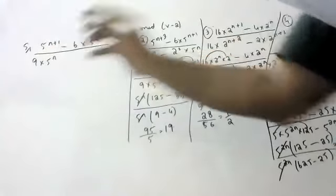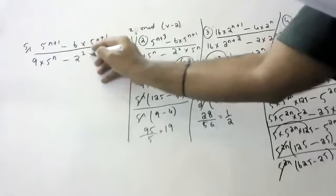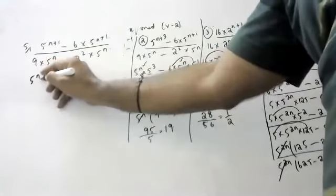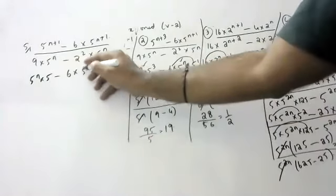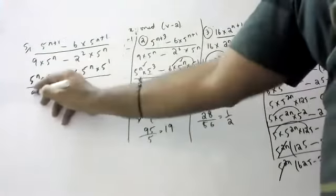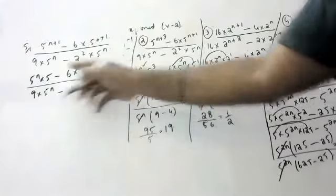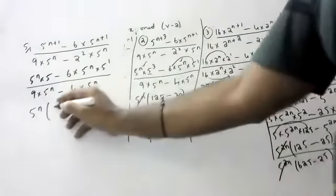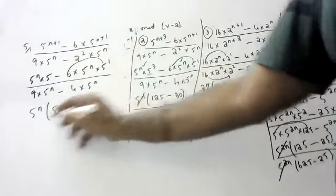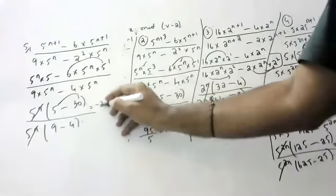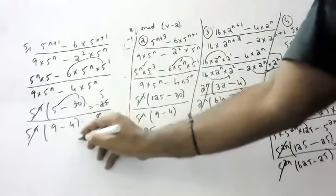Another question: 5 to the power n plus 1, minus 6 into 5 to the power n plus 1, divided by 9 into 5 to the power n, minus 2 squared into 5 to the power n. A student explains: 5 power n into 5 power 1, minus 6 into 5 power n into 5 power 1. What is common here? 5 power n. So numerator: 5 minus 30. Denominator: 5 power n into 9 minus 4. 5 power n cancels, giving minus 25 by 5.